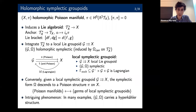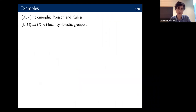An intriguing phenomenon is that in many examples this carries an additional structure of a hyperkähler manifold. Let's see a few examples. We take a holomorphic Poisson manifold, assume it's Kähler, and look for a local symplectic groupoid integrating it.